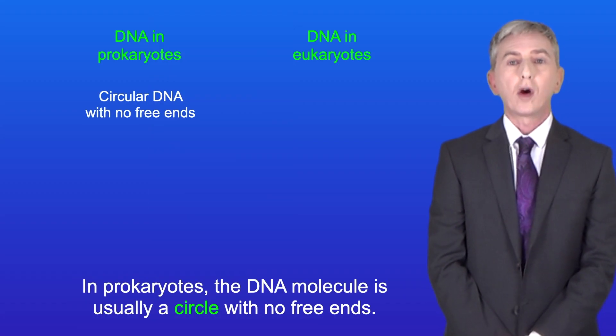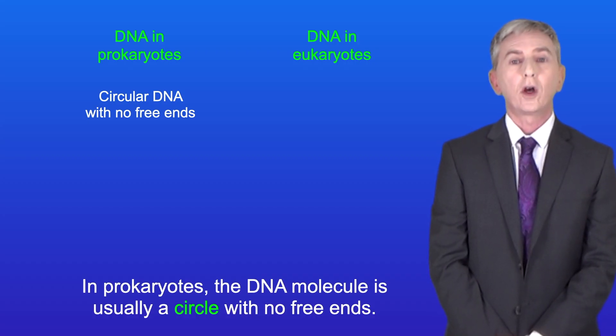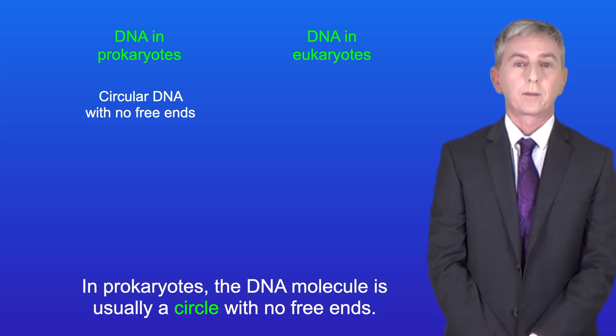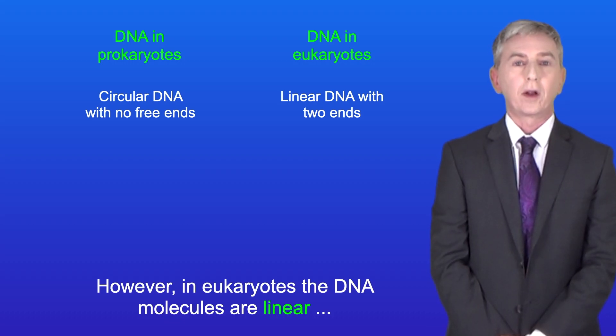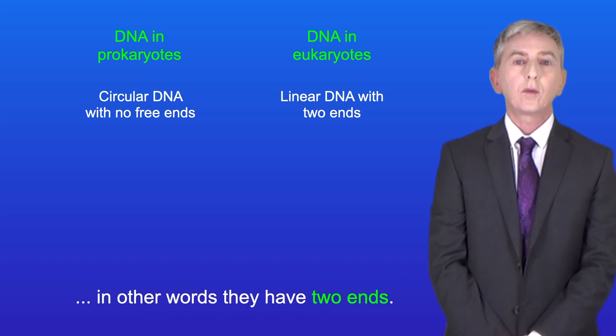In prokaryotes the DNA molecule is usually a circle with no free ends. However in eukaryotes the DNA molecules are linear — in other words they've got two ends.